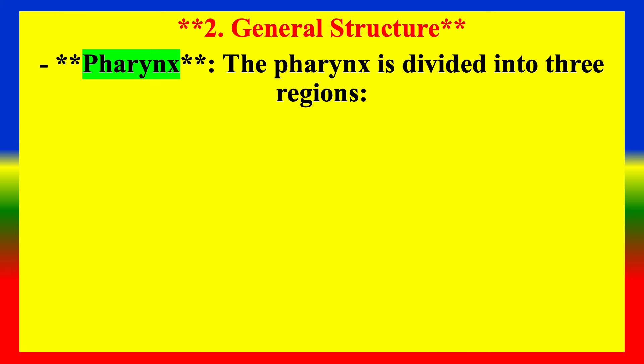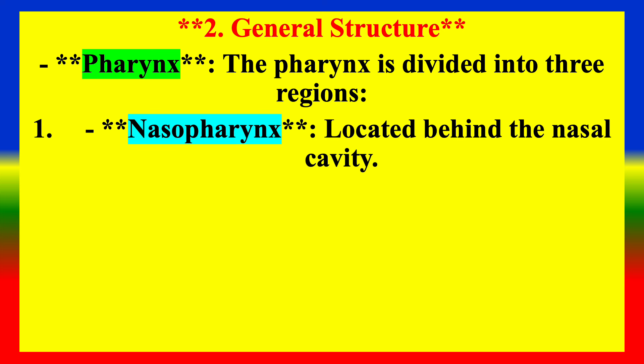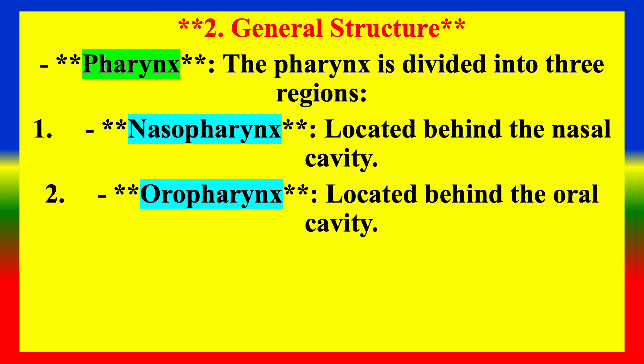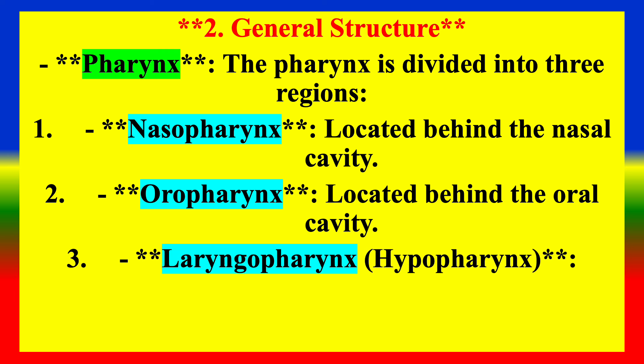General Structure — Pharynx: The pharynx is divided into three regions. One: Nasopharynx, located behind the nasal cavity. Two: Oropharynx, located behind the oral cavity. Three: Laryngopharynx, also called the Hypopharynx, which extends from the hyoid bone to the esophagus.